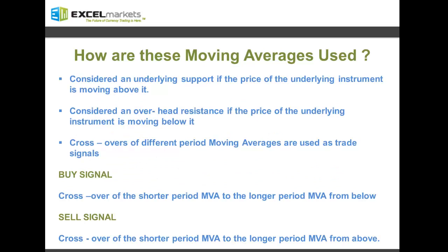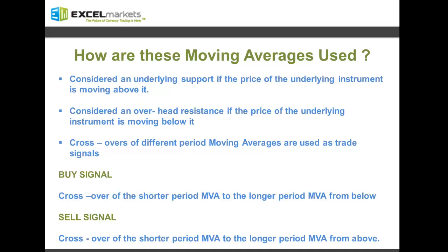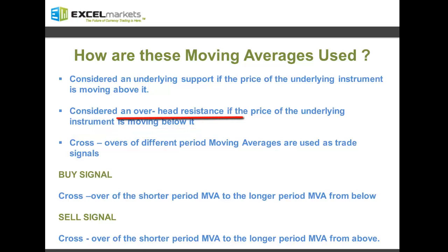So how are these moving averages used for trading? Moving averages are often considered or treated as underlying support or overhead resistance levels. If the price of the underlying financial instrument on which the moving average has been applied is trading at a price above the moving average, then the moving average can act as an underlying support. Alternatively, if the price is trading below the moving average level, then the moving average can act as an overhead resistance level.